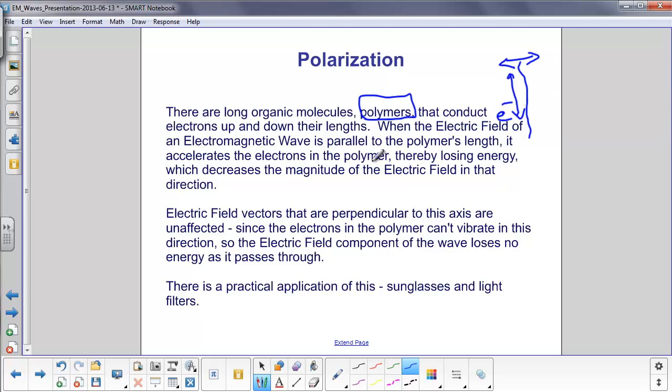So if you have an electric field of an electromagnetic wave parallel to the polymer's length, it accelerates the electrons in the polymer, and that's going to take energy away from the electromagnetic wave. So the electric field that is pointed in that direction will lose energy. Electric field vectors that are perpendicular to the chain are unaffected because the electrons can't vibrate in that direction, so the electric field component loses no energy.